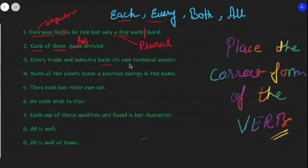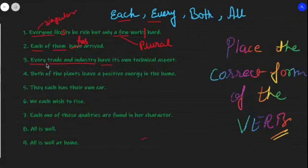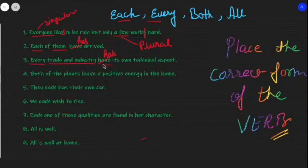'Every trade and industry has its own technical aspect.' Though there are two nouns — trade and industry — we have the word 'every' before them, which means 'each trade and each industry.' So again we place only a singular verb: 'Every trade and industry has its own technical aspect.'